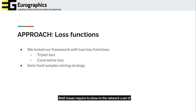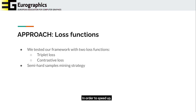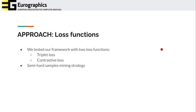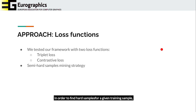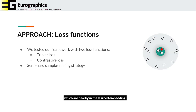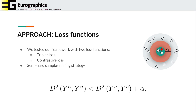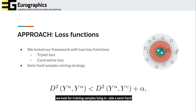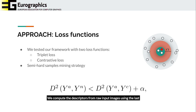Both losses require showing the network a set of corresponding positive and non-corresponding negative samples. Selecting the negative samples becomes increasingly difficult as the network learns. In order to speed up, we designed a mining strategy and built useful triplets on the fly for each training iteration. In practice, in order to find hard negative samples for a given training sample, we compute the descriptor and ignore other candidates which are nearby in the unlearned embedding. We also ignore candidates which are already very far away in this space since the network has already learned to separate them as negative examples. Instead, we look for training samples lying inside a semi-hard margin area delimited by a parameter alpha.